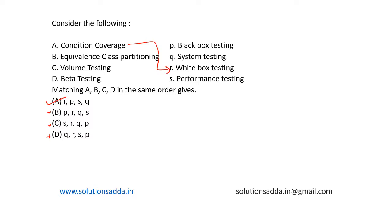Let's verify the other options. Equivalence class partitioning divides the input test data into partitions, where at least one value from each equivalent partition is tested. Only input values are needed, not the code, hence it is black box testing. So B is mapped to P — this is correct.